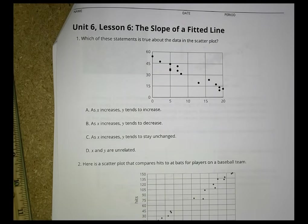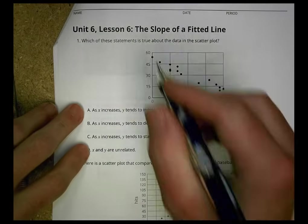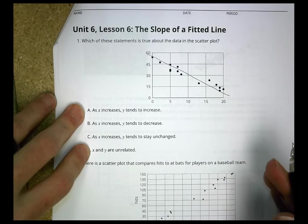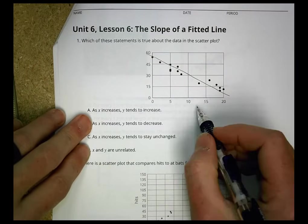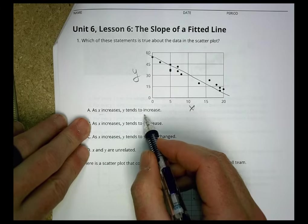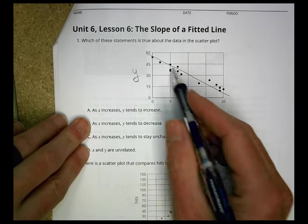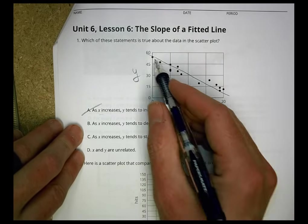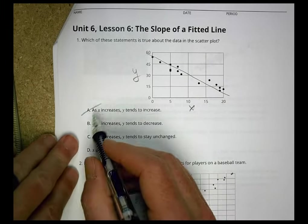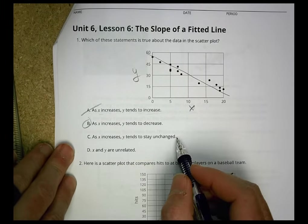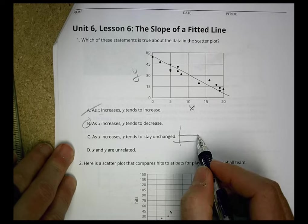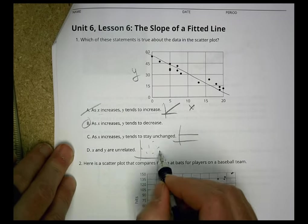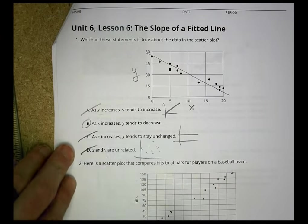Which of these statements is true about the data in the scatter plot? All right. So here's our scatter plot. If we drew a quick line, we could draw a line something like that just to see where things are going. Let's see. This is our X. This is our Y. As X increases, is Y increasing? Nope. It's not doing that. As X increases, is Y decreasing? Yes. As this gets bigger, this gets smaller. So that's true. X increases, Y stays unchanged? Now that would look like this. And this one, by the way, would look like that. X and Y are unrelated. That would be like this. Makes no sense. So we're going to go with B.